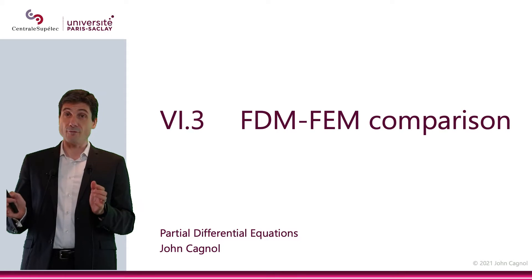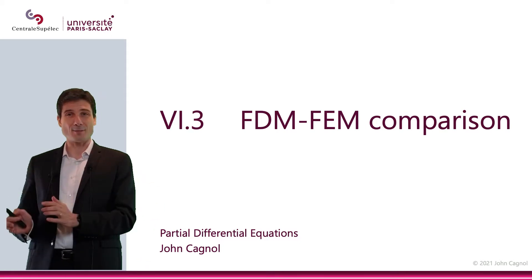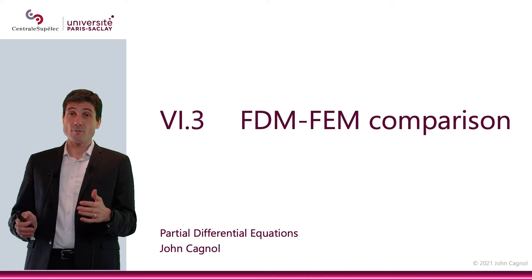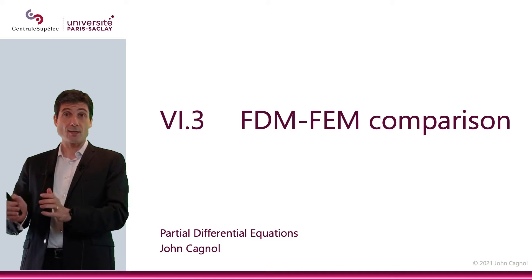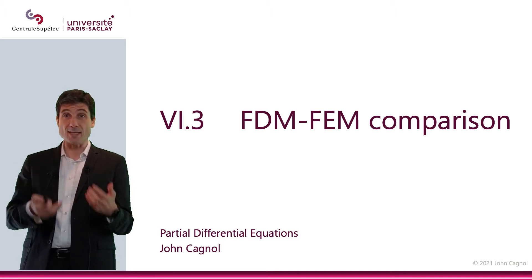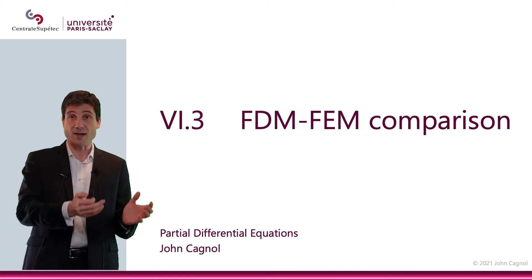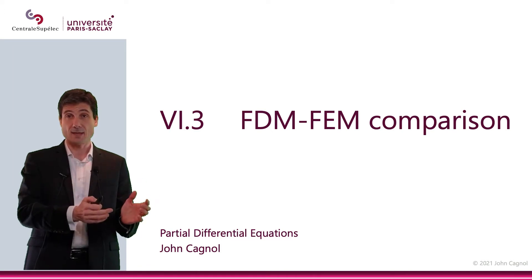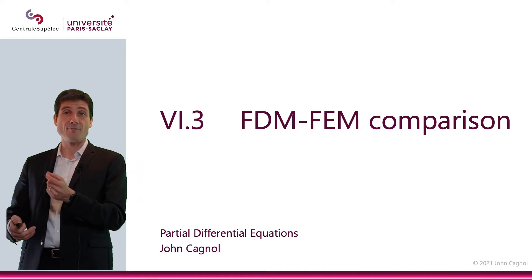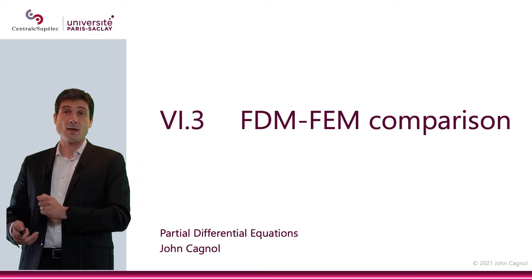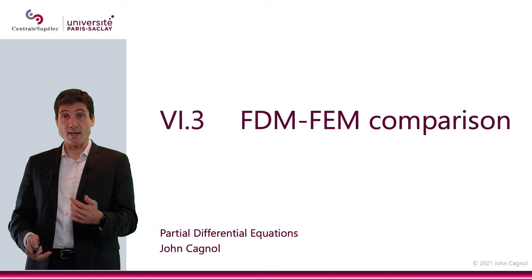Let me conclude this chapter with a short video to compare the finite element method with the finite difference method. For the finite element method, what you do is take your function u, the unknown, and decompose it onto a basis of functions. That basis is finite because you have a finite dimensional space. What you do is look for the components, the coefficients, of the function u. This gives you a linear system: Au equals f.